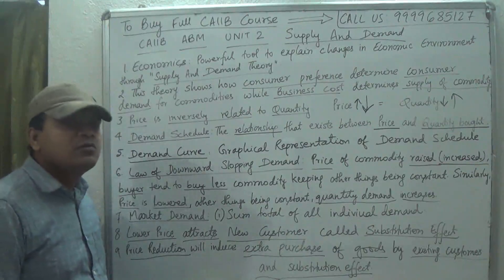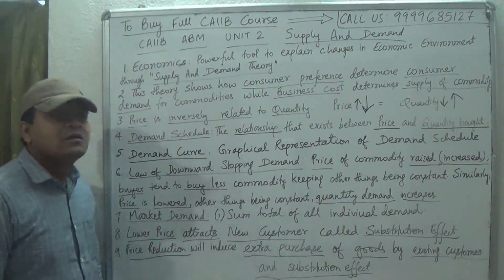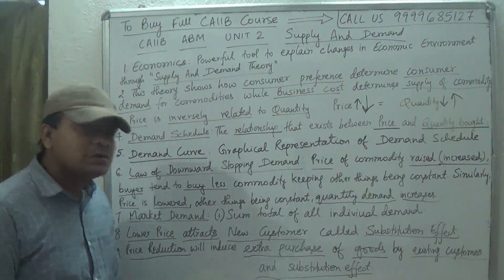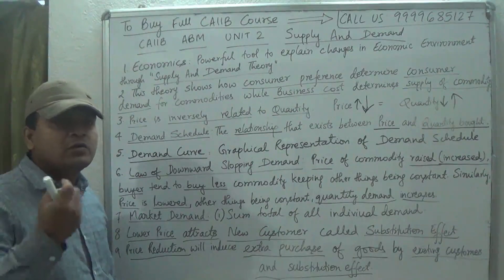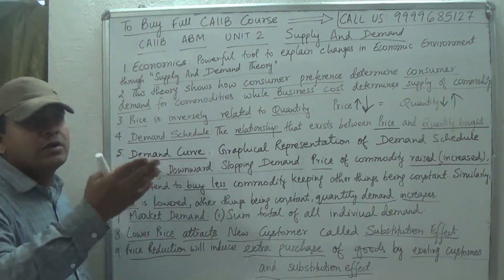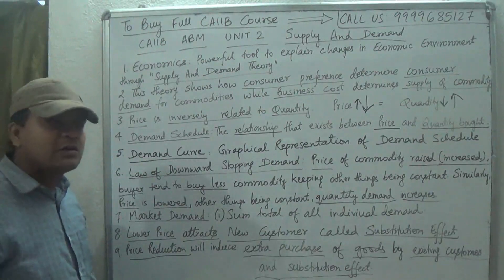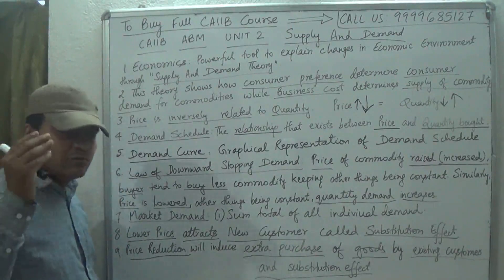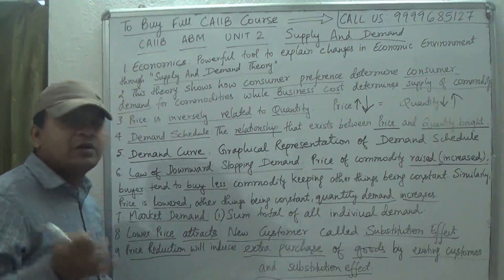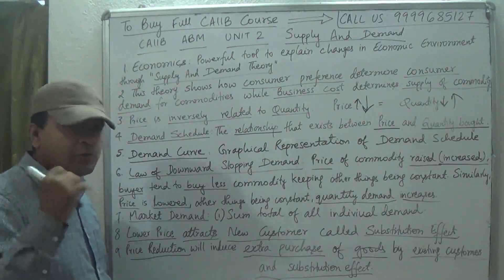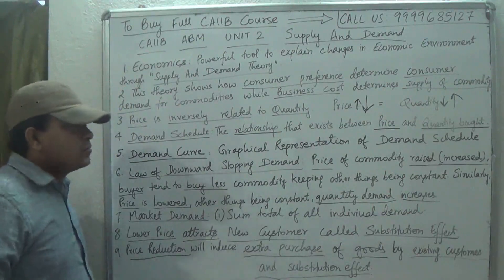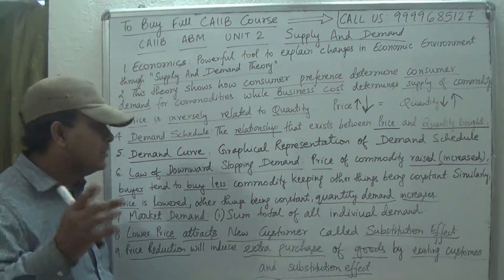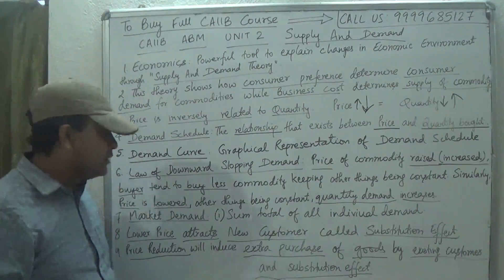Market demand is nothing but the sum total of all individual demand. For example, for India, we have to calculate the market demand by adding all marketplaces — Coimbatore, Chennai, Hyderabad, Bangalore, Mumbai, Pune, Delhi, Kolkata, Bhopal, Patna, and all cities including rural areas — to give the total market demand for the country.